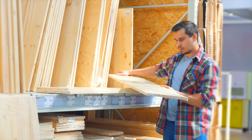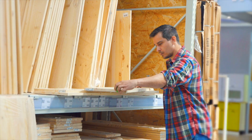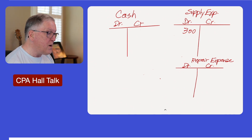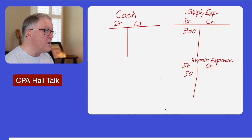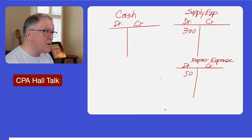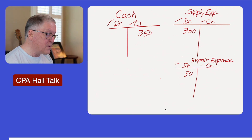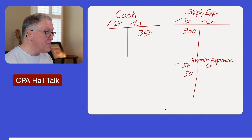In this first example, we'll pretend you and I are going to the hardware store to buy materials. We buy $300 of supply materials and some repair expense materials, writing a check to the hardware company for $350. Notice there are debits and credits for cash, for the supply expense account, and for the repair expense account. Every account has a debit and credit side, though you may only use one side in your accounting.